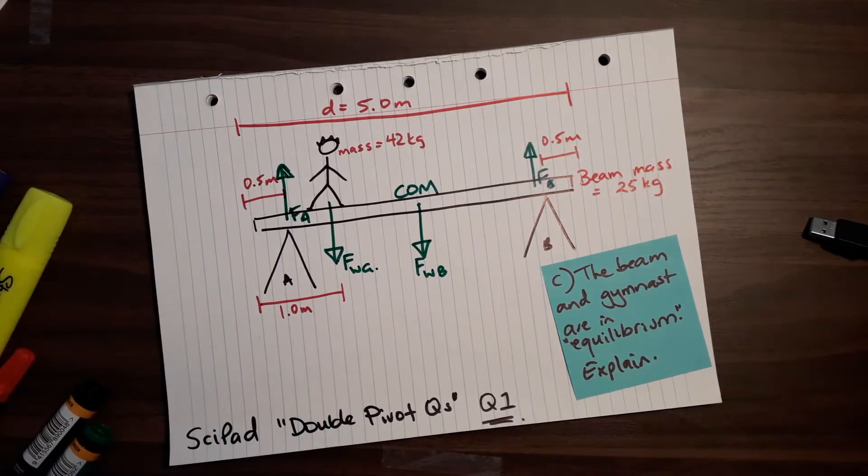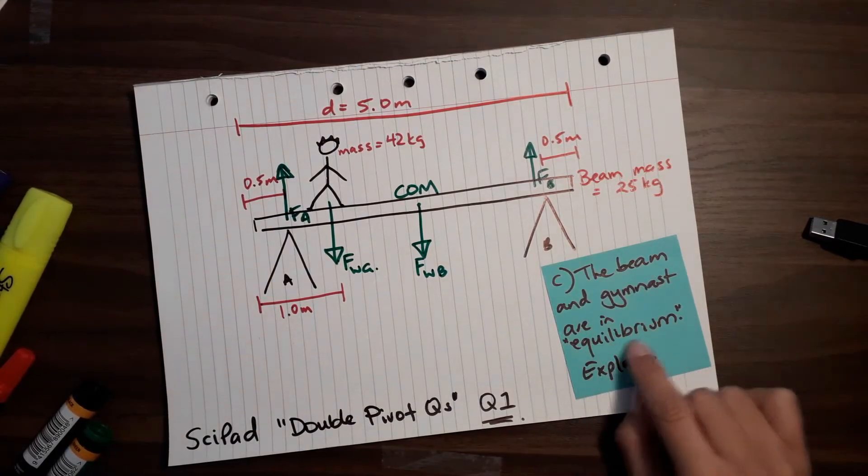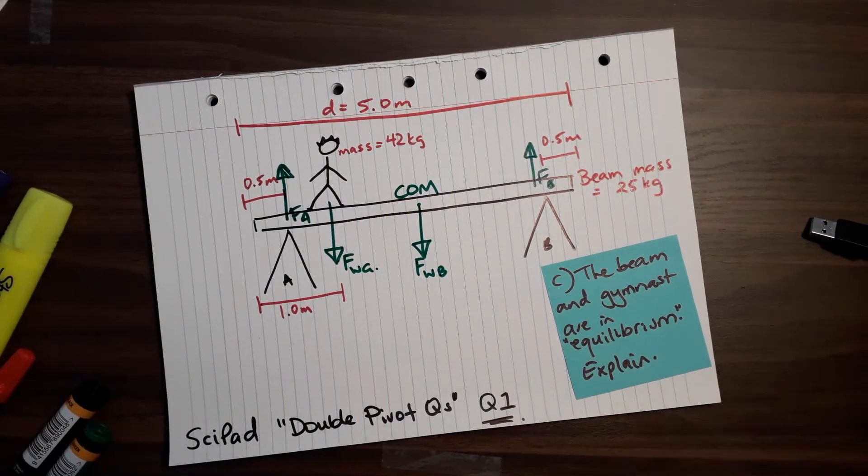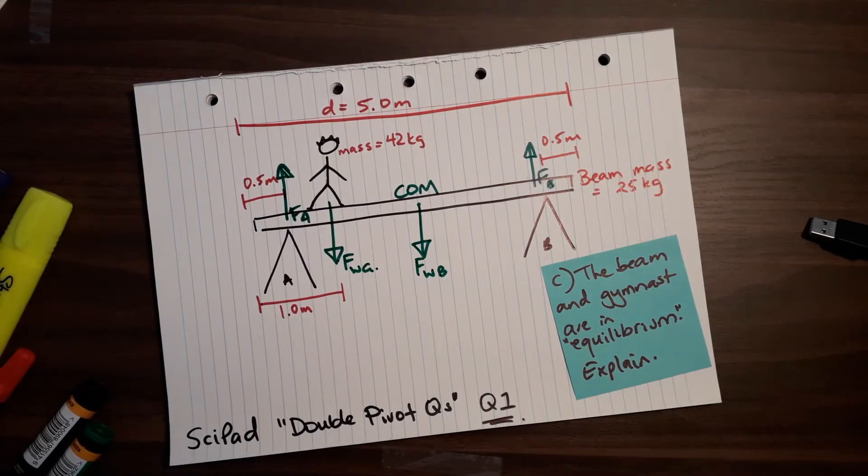Hello, so here we are with part C of this question. The beam and the gymnast are in equilibrium. I'll explain what this means if you have to write this in an exam.